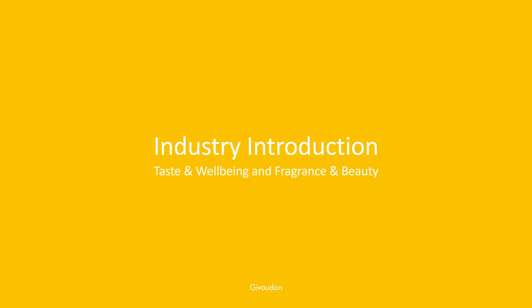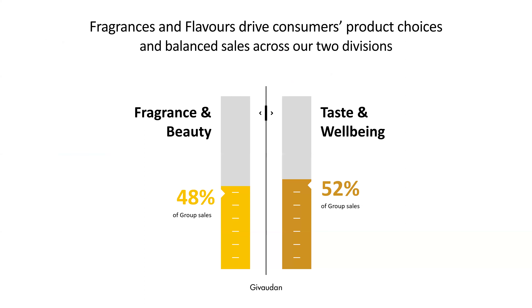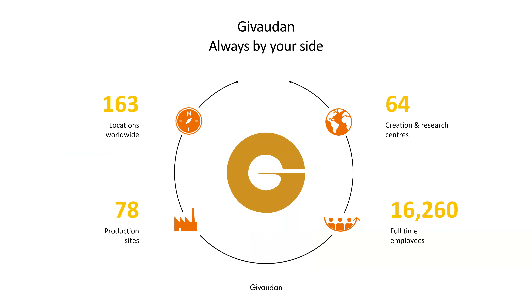On to the industry introduction. I work at Givaudan and the company is organized into two divisions: fragrance and beauty, and taste and well-being. They are about equal size in terms of sales. The company has a quite complex history of acquisitions, mergers, and spin-offs, and it is quite distributed all around the world with different research sites.